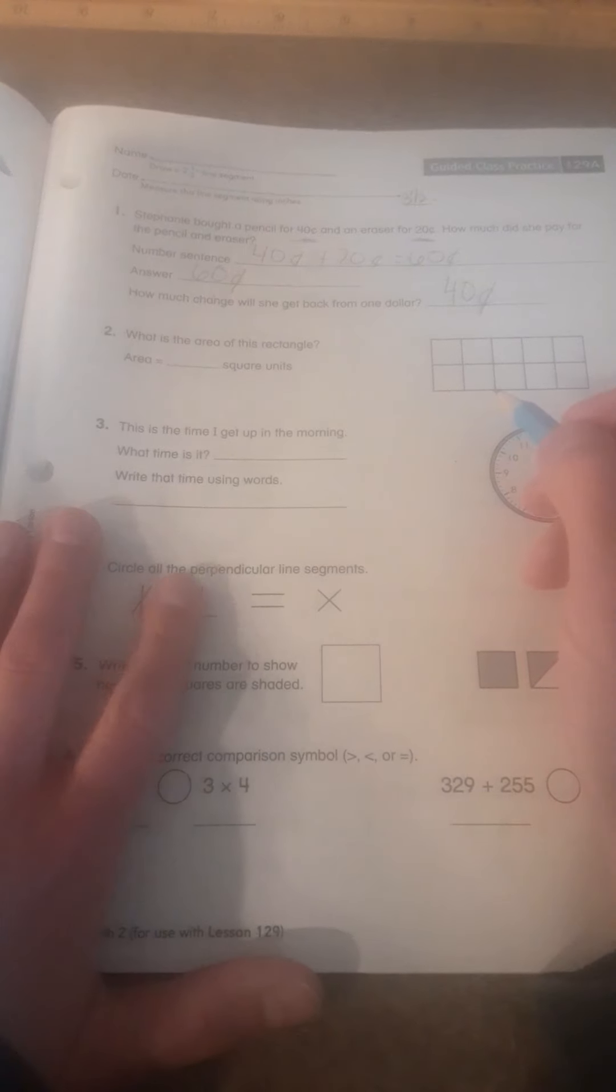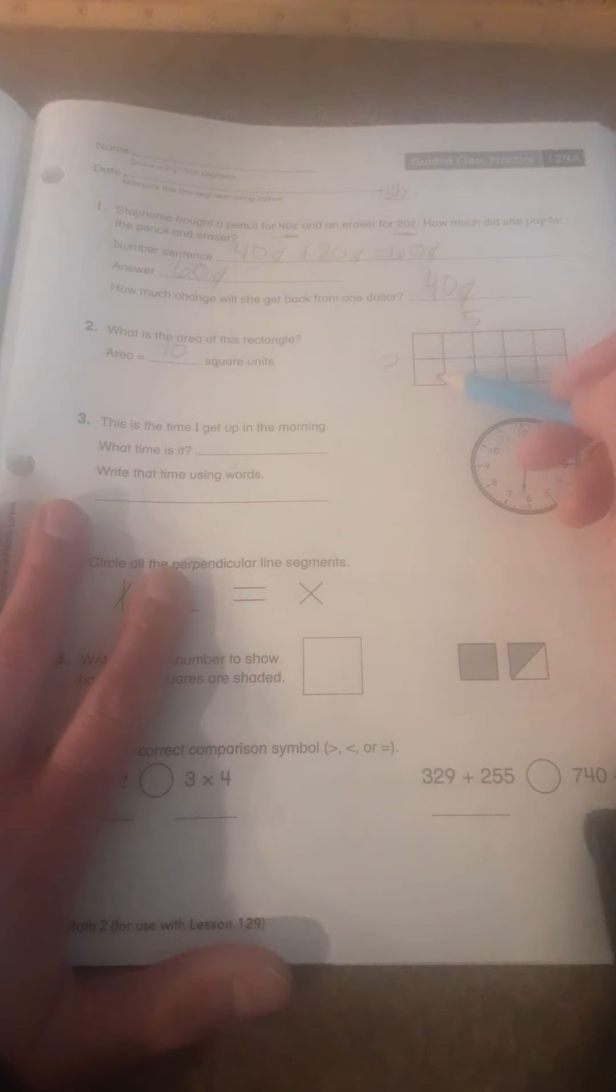What is the area of this rectangle? 2 and 5 would be 10. Otherwise, you could have just counted them.